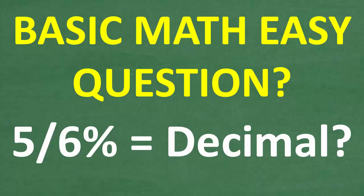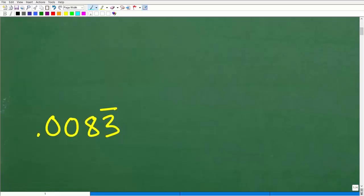Let's take a look at the answer. 5/6% as a decimal is 0.0083 repeating. If you don't know what this means right here, I'll fully explain this. But this is the answer.